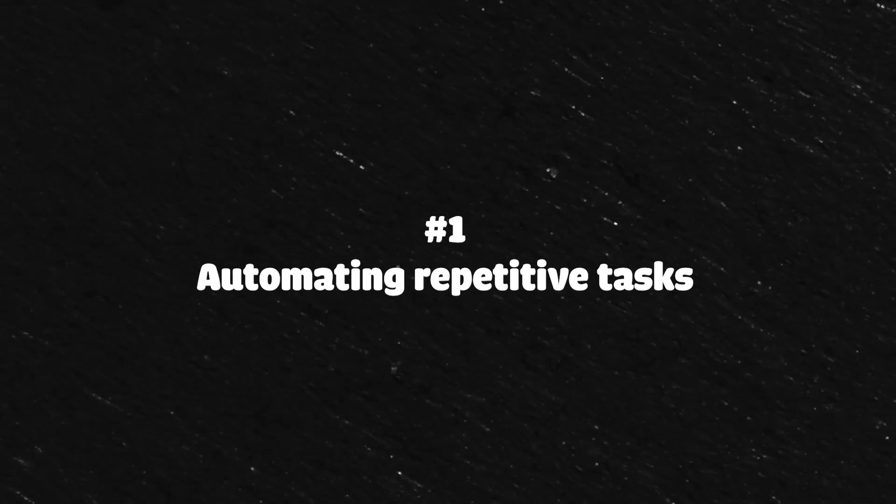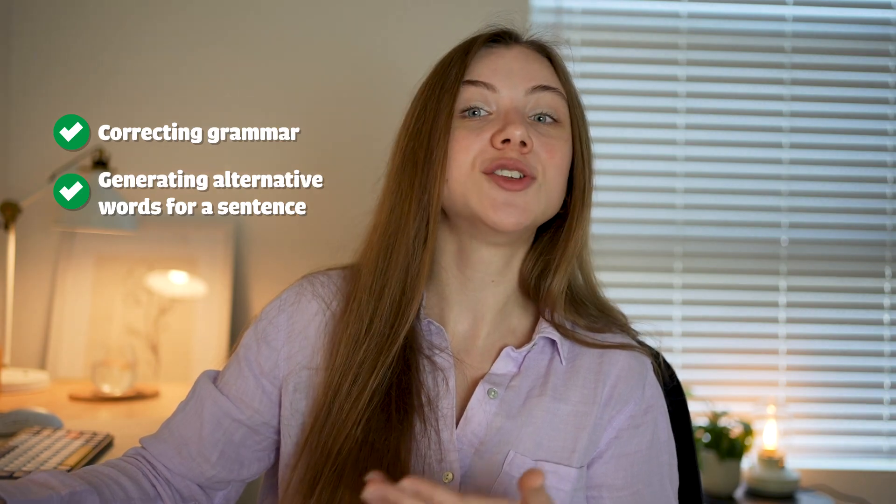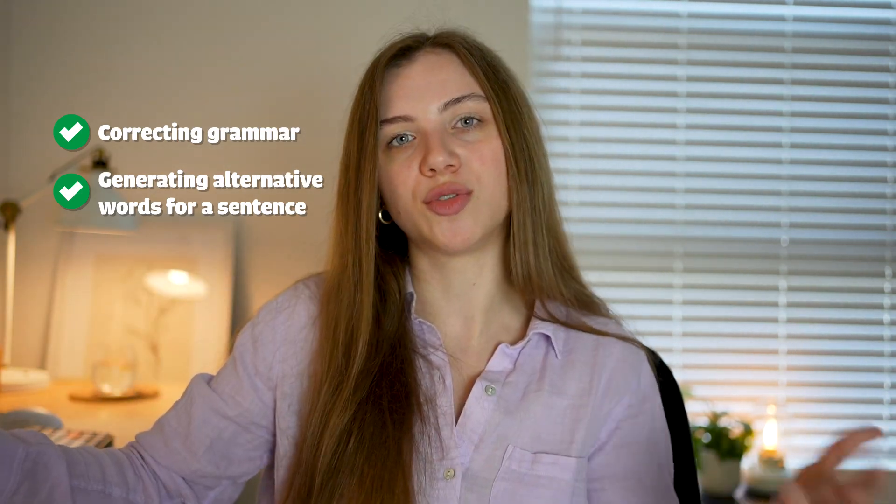One of the first things that I started doing with ChatGPT is correcting my grammar, because I'm not a native English speaker and I may not have perfect grammar all the time. My choice of words can be off, and I wanted ChatGPT to help me with that — to correct my mistakes and also generate alternative ways to say the same thing so I can learn new words. This task became quite repetitive very quickly because I had to say the same things over and over again: correct my grammar, come up with alternative ways, and that kind of stuff.